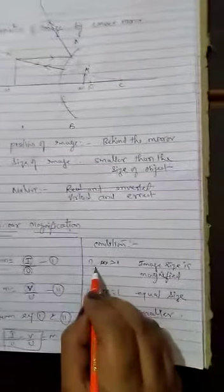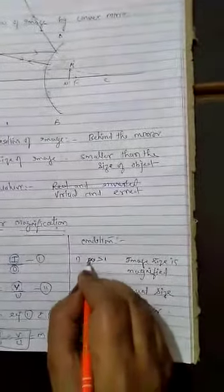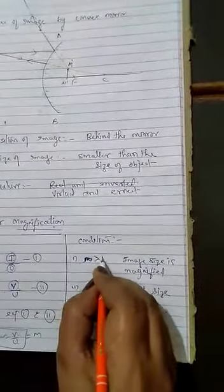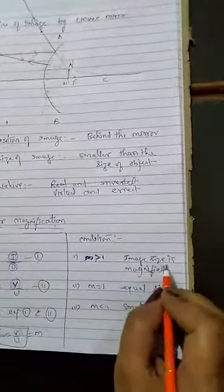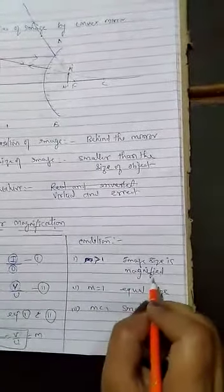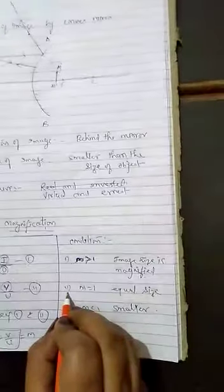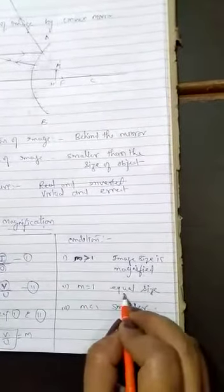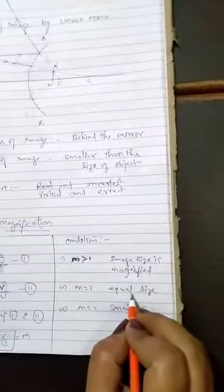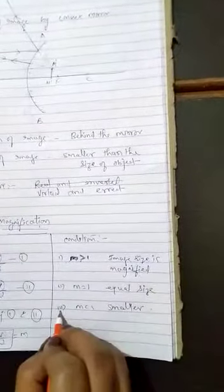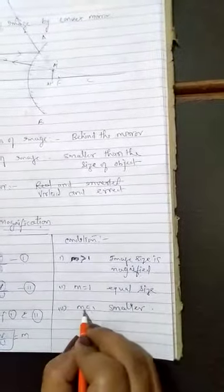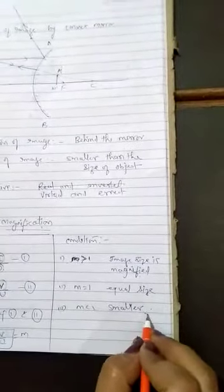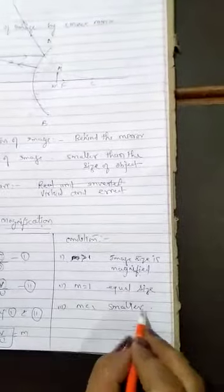Now some conditions on linear magnification M. Number 1: if M is greater than 1, the size of the image is magnified. Number 2: if M is equal to 1, the size of the image equals the size of the object. Number 3: if M is less than 1, the size of the image is smaller than the size of the object.